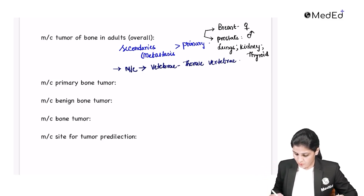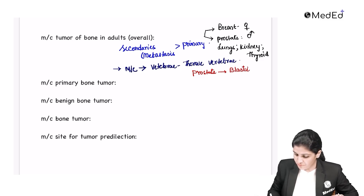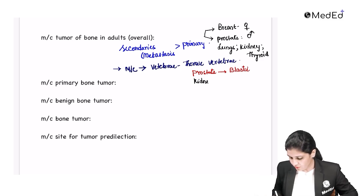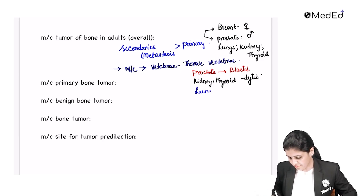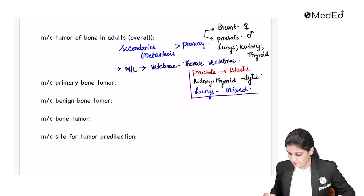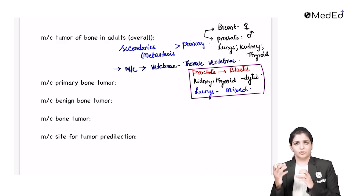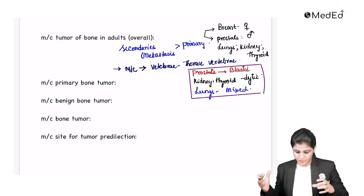Another important point: from the prostate, the secondaries are usually blastic. From the kidney and thyroid, these are lytic. From the lungs, these are mixed. This is a highly important point to remember. The nature of the tumor — whether it is blastic or lytic — is very important for arriving at the diagnosis.